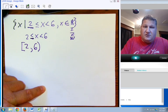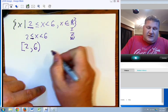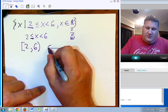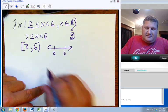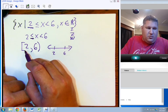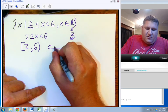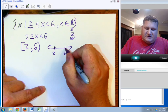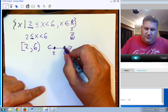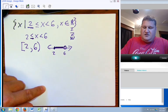So 6 is not actually included. If we wanted to put this on a number line, all we would really need is a 2 and a 6. And because the 2 is equal to or included, we would use a solid dot. The 6 is excluded, not equal to. We're going to use an open circle and shade the middle.